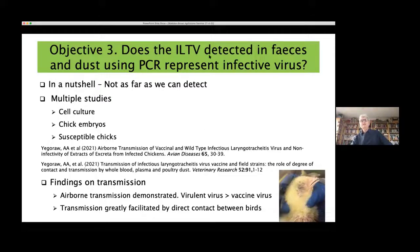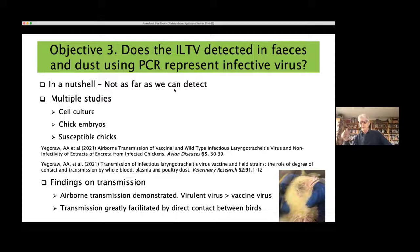We had previously shown there's a lot of ILTV in faeces, with up to a million or 10 million genome copies per milligram of dust. However, we have never been able to isolate live virus from excreta or dust samples, which really surprised us. We worked with cell culture, chick embryos, and susceptible chicks trying to infect them with material from these sources and failed every time. These papers describe exhaustively how we did that work.